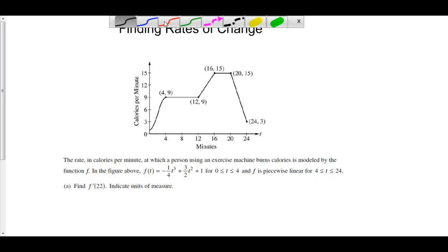Let's locate time 22 on this graph. It's approximately right here. Here is time 22, which falls on this linear graph from (20, 15) to (24, 3). Now, I want to find the derivative of f, which is this graph, at this particular point.